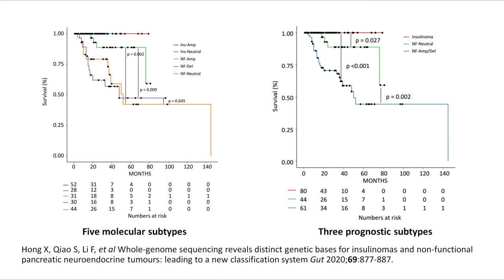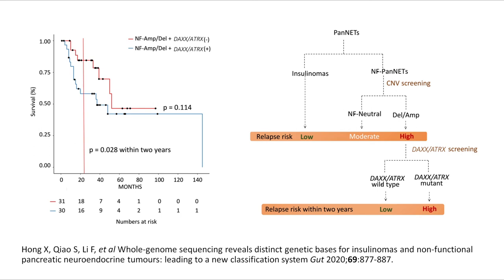Taking a closer look at the NF-ANF-DAL subtype, we found that patients with DAXX-ATRX mutations had a significantly higher risk of relapse in the first two-year period. Finally, we proposed that copy number variations could be used to stratify relapse risk into three levels: low risk for insulinoma, moderate risk for NF neutral, and high risk for NF-ANF-DAL. Furthermore, NF-ANF-DAL with DAXX-ATRX mutations is associated with an even higher risk of relapse in the first two-year period.